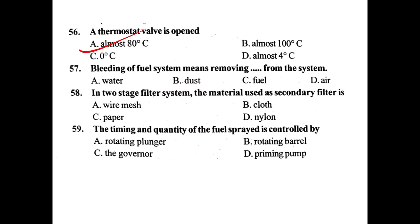Bleeding of fuel system means removing dash from the system. Answer: Air. In a two-stage filter system, the material used for the secondary filter is paper.